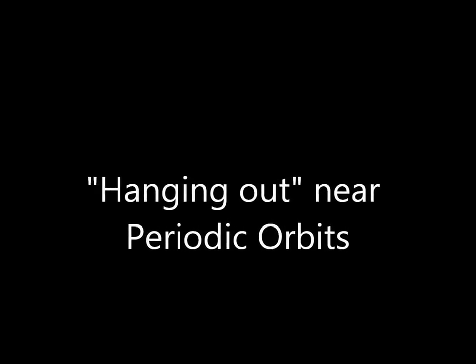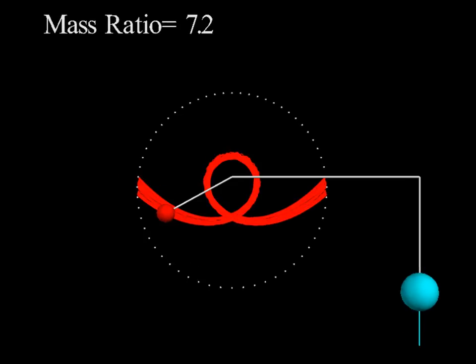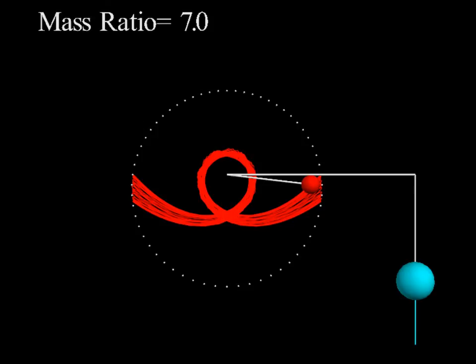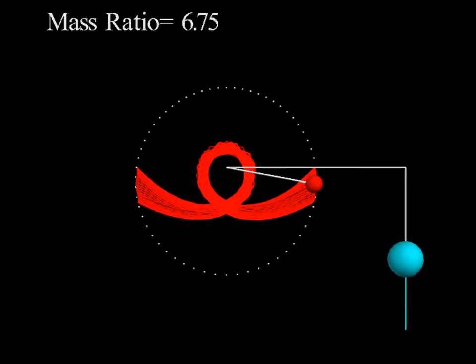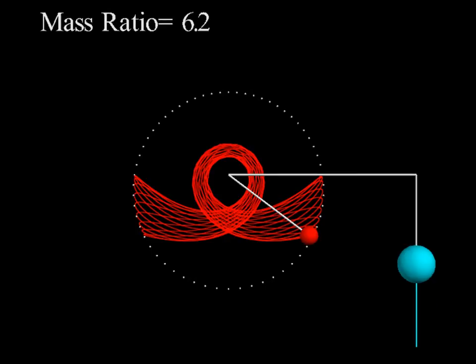But what happens when the mass ratio diverges from the periodic orbits? In this system, we find that most trajectories will hang out near a periodic orbit before transitioning to another one. Take the mass ratio of 7.692, for example. Steadily decreasing the mass ratio causes the orbits to change, but the overall motion is similar to that periodic orbit. As we approach 6.014, we find paths morphing into a new periodic orbit.